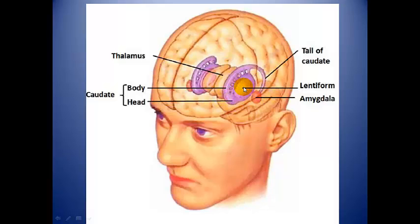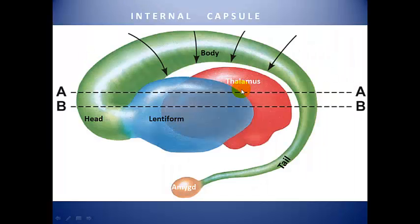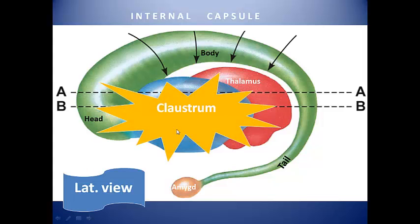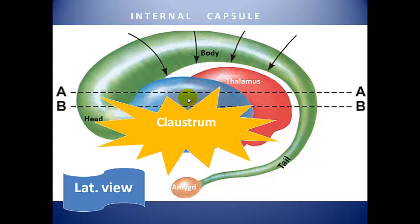The other functionally related nucleus is the claustrum, which lies just over or in between these two nuclei, covering them. Again, this is the head, body, and tail of the caudate. The tail is continuous with the amygdala and the head is continuous with the lentiform nucleus — which consists of globus pallidus and putamen. The internal capsule lies in the cleft between them, and the claustrum covers these structures.